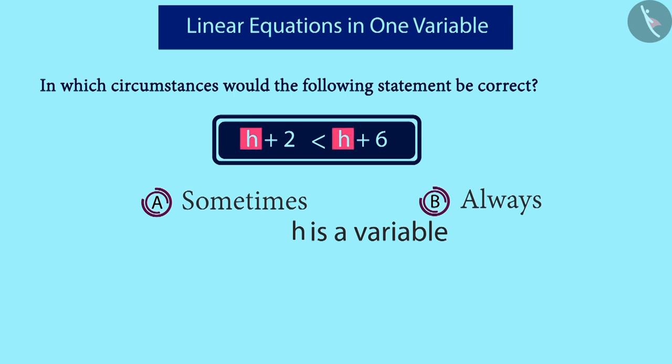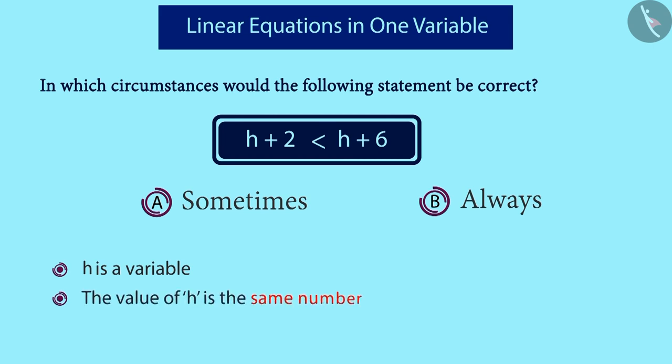Here, H indicates an unknown number. So, the value of H is the same number, but we do not know what it is. Based on the same assumption, if we place the same number in place of H on both sides, we shall see that this statement will always be true.